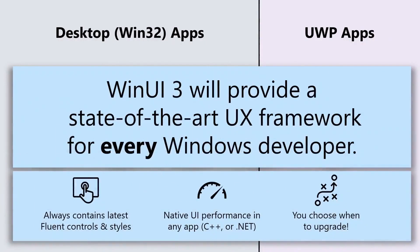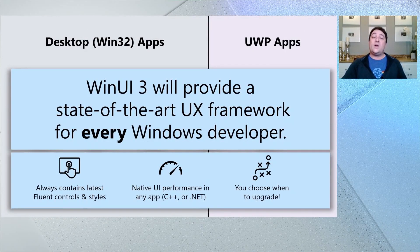This adds up to three big advantages WinUI will provide. First, it'll offer cutting-edge Fluent controls and styles for apps that really care about having the best user experience on Windows. Second, WinUI 3 itself is implemented in C++, so whether you're using it from C++ or .NET, your UI will have native performance and won't pull in the .NET CLR without you deciding to take your app to .NET. Finally, because WinUI 3 ships separately from the operating system, you get to decide when you upgrade — if you're happy with WinUI 3.1, you don't ever have to move to 3.2.